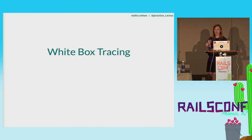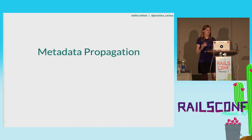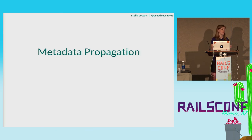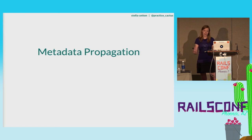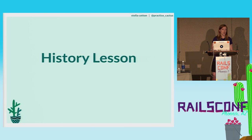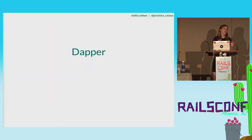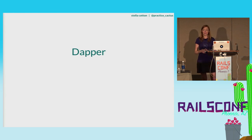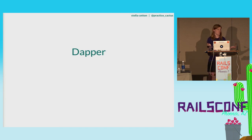White box tracing is a tool that helps get around that problem. It assumes that you have an understanding of the system and can actually change it. We explicitly include information about where a request came from using something called metadata propagation — that's a type of white box tracing. It's just a fancy way of saying that we can change our Rails apps to explicitly pass along information so that you have an explicit trail of how things go. Another benefit of white box tracing is real-time analysis.